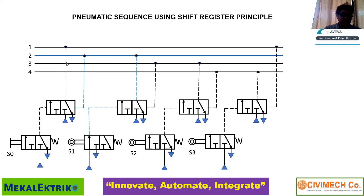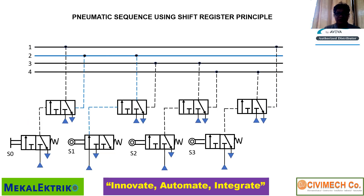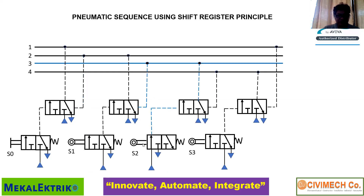Next, if I press S1, the air line will shift from 1 to 2 — that's why they call it shift register principle. The blue line will shift and it will reset S0, so there is no overlapping signals. This is always the problem in sequential control: overlapping signals happen when you do intuitive designing of your control. So from line 1 to line 2, then from line 2 to line 3 if you press S2 — it shifts to 3. And again if I press S3, the line will shift from 3 to 4.